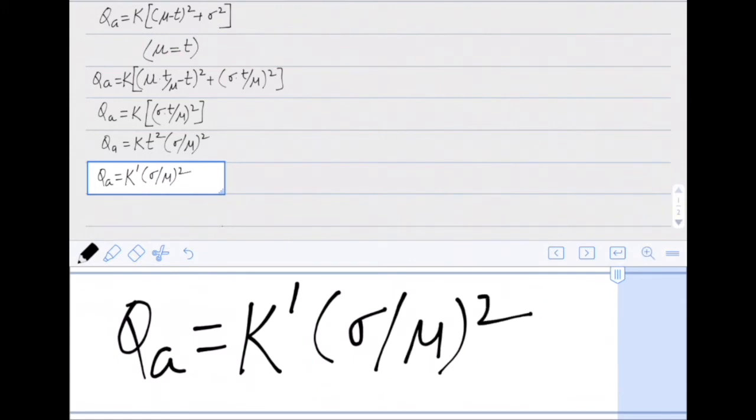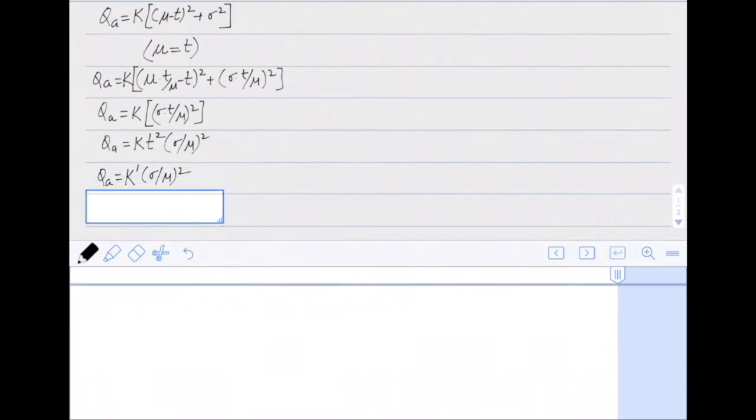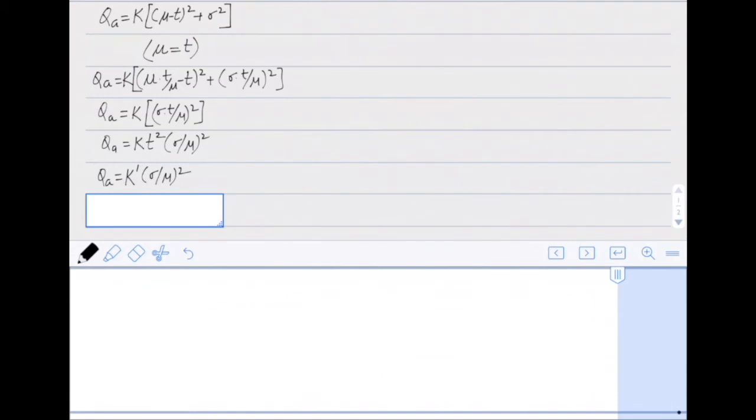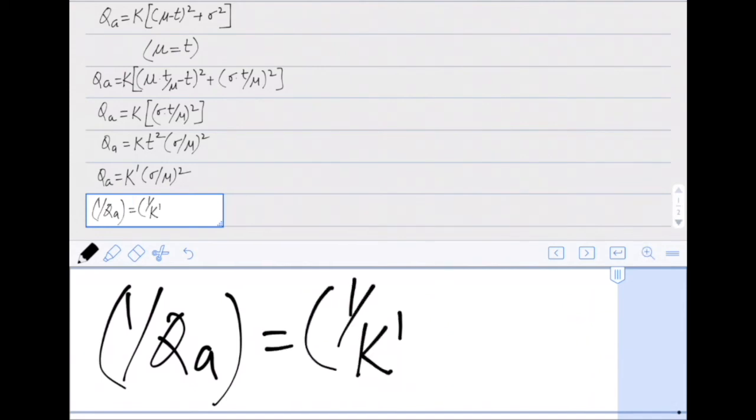Now ultimately our aim is to maximize the quality, or we can say that the quality loss QA should be minimized. So if QA has to be minimized, we can say that 1/QA needs to be maximized. We can rewrite the same equation as 1/QA equals 1/K prime multiplied by (mu/sigma) whole square.